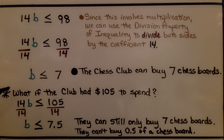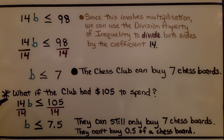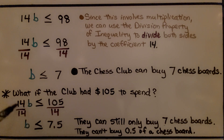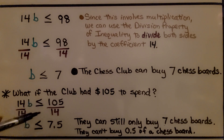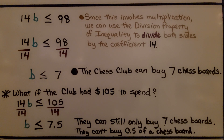What if the club had $105 to spend? We do the same thing: 14 times some unknown number of boards is less than or equal to 105. Dividing both sides by 14 gives b is less than or equal to 7.5. They can still only buy 7 chess boards because they can't buy half a chess board — you have to buy a whole one. The answer is still 7, with a little money left over.